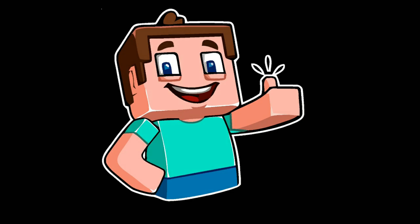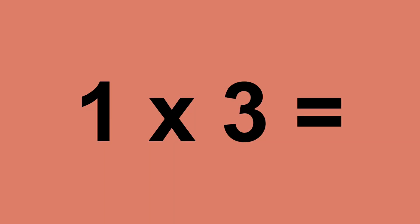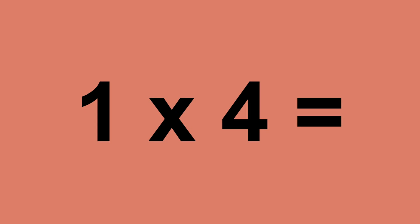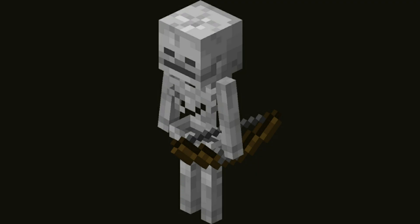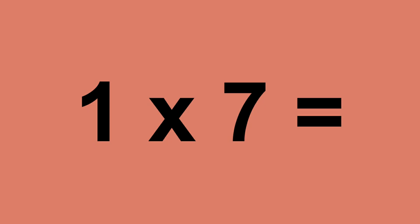1 times 0 equals 0. 1 times 1 equals 1. 1 times 2 equals 2. 1 times 3 equals 3. 1 times 4 equals 4. 1 times 5 equals 5. 1 times 6 equals 6. 1 times 7 equals 7.